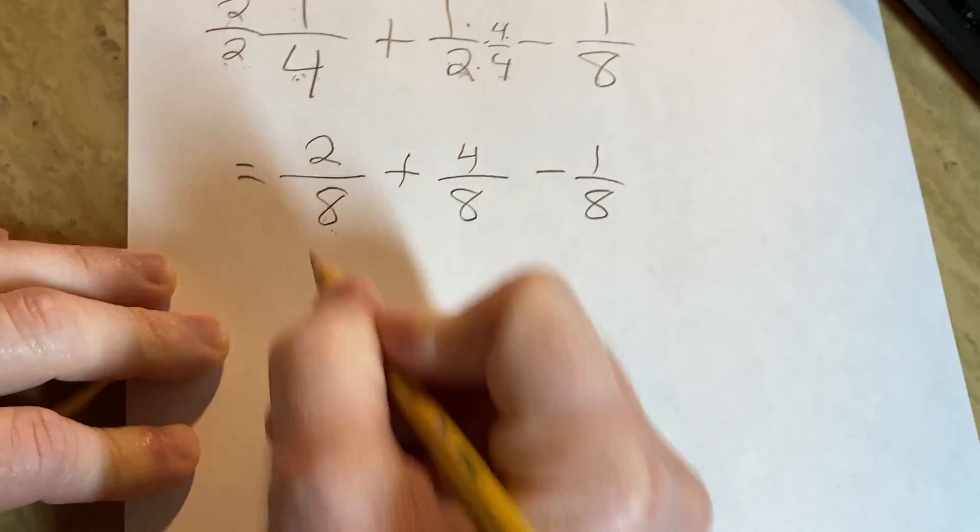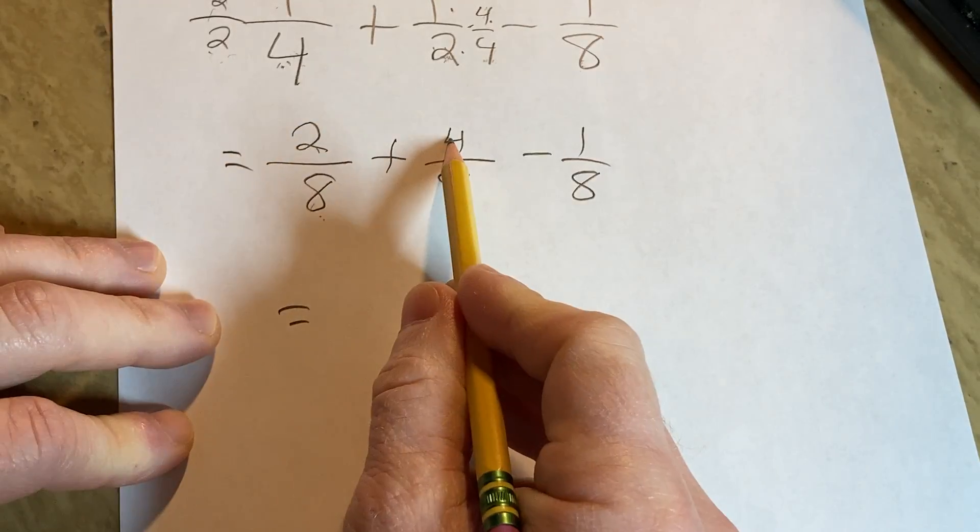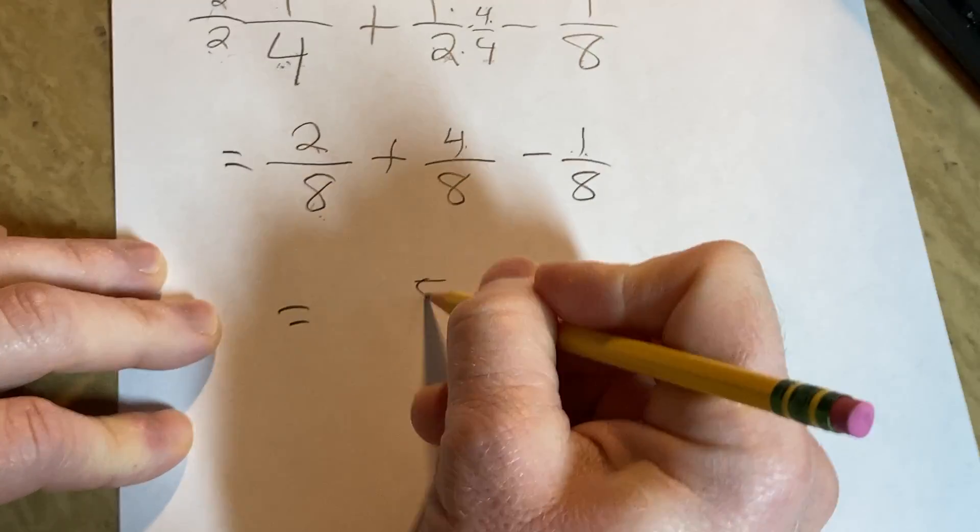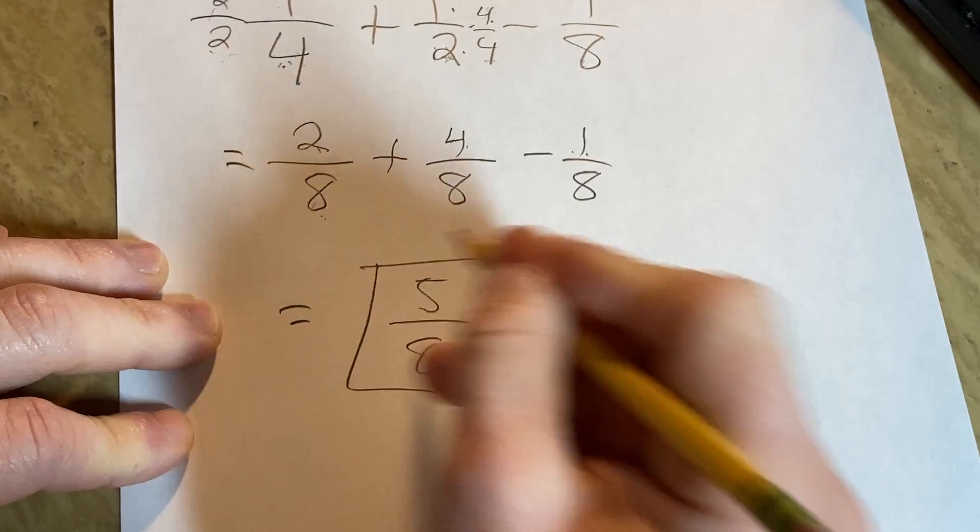Minus 1 over 8. This is going to be 2 plus 4, which is 6. 6 minus 1 is 5. So we end up with 5 over 8 as our answer.